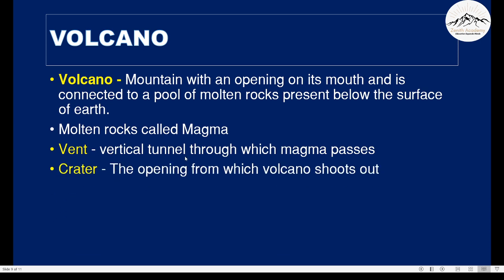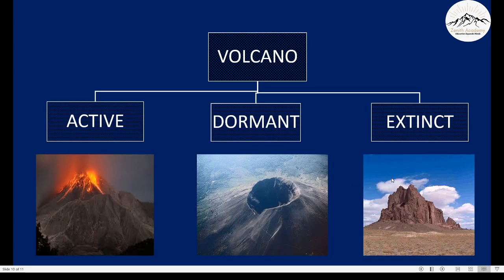So, vent is the vertical tunnel through which magma passes, as we saw earlier. And crater is the opening from which the volcano shoots out. The volcano is of three types. Active volcano is when the lava is flowing. Dormant volcano is when the magma is pressured but there is no lava flowing.